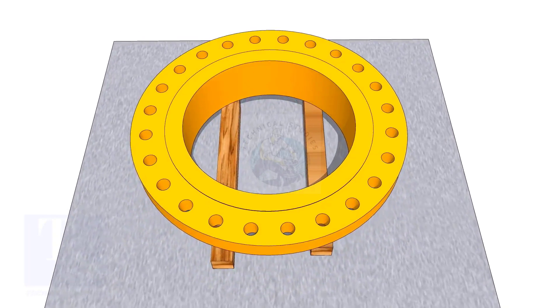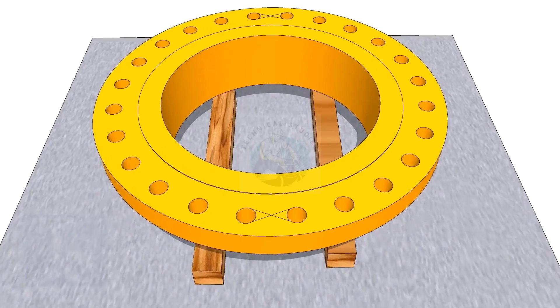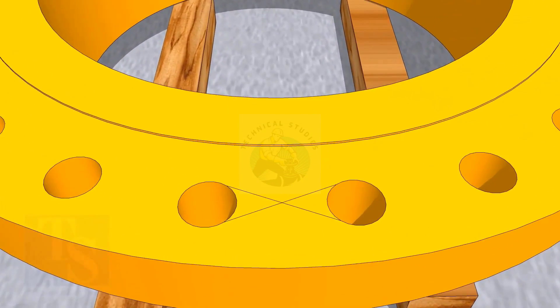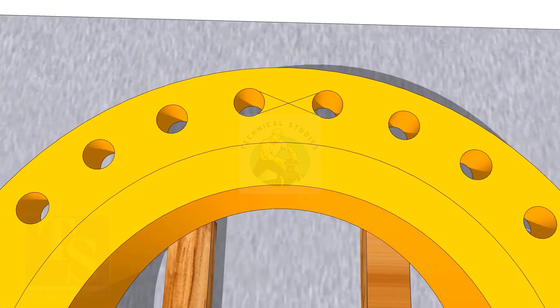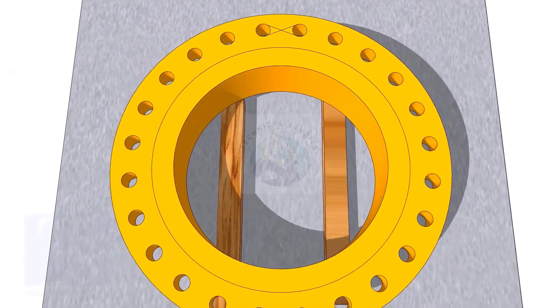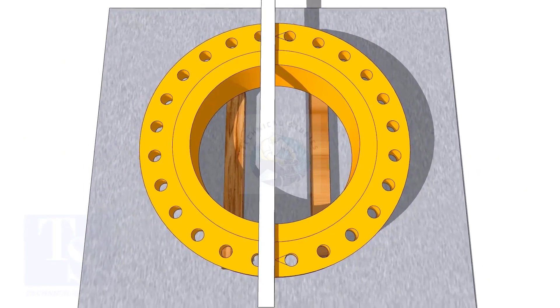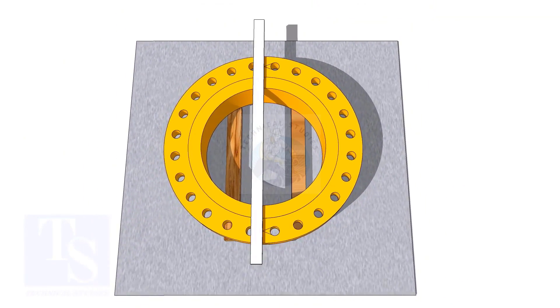In my previous videos, many times I had shown how to mark the center line of a flange. I am showing this scene again for the new viewers. Draw the center line of the flange and transfer it to the sides as shown.